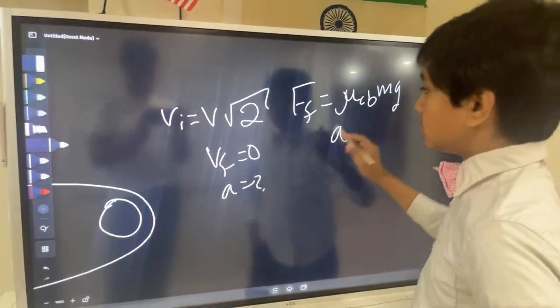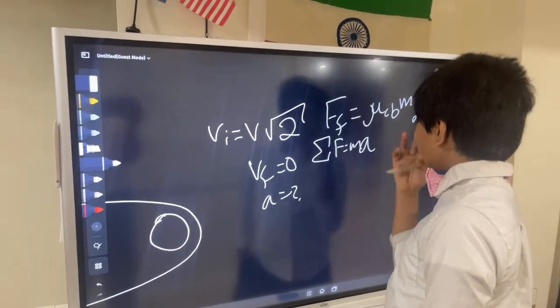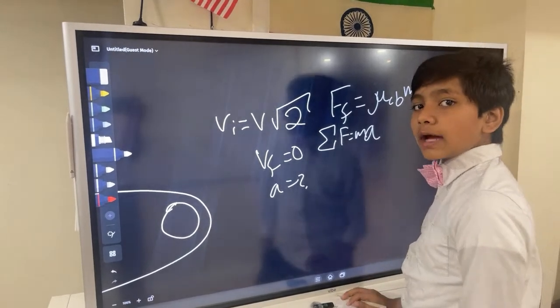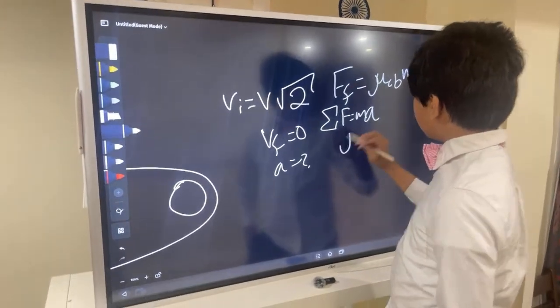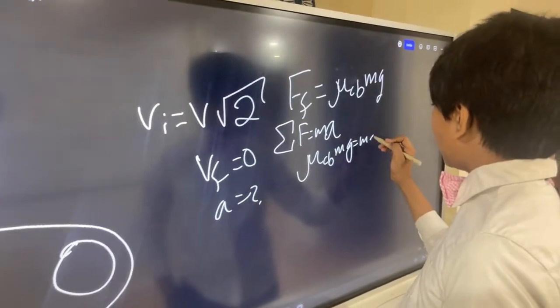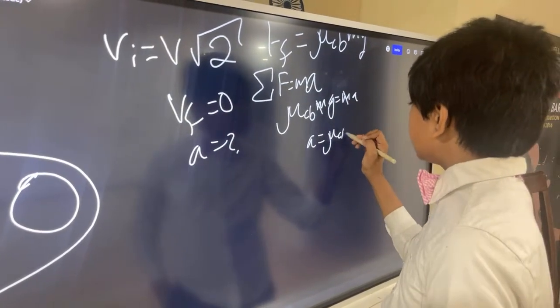since the net force is M, A, and the only force acting right now is the force of friction, the only force acting that isn't being balanced, then we see that mu Cb, Mg should be equal to M, A, or in other words, A is equal to mu Cb times G.